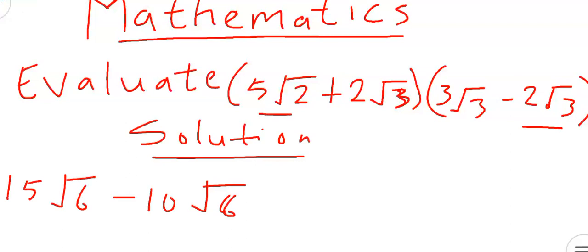Then the next one, plus 2√3 multiplied by 3√3. 2 times 3, that will give us 6, then √3 multiplied by √3, that will give us √9. Then the next one will be 2√3 multiplied by -2√3. Plus times minus, that will give us minus, 2 times 2, that will give us 4, and √3 times √3, that will give us 9.